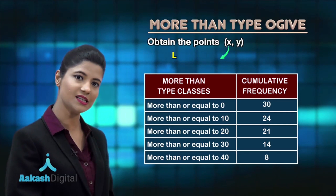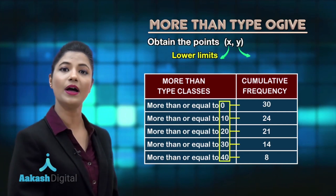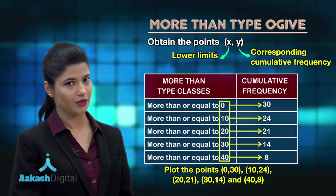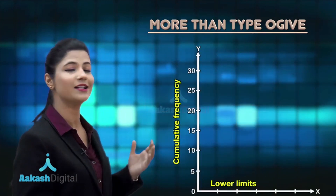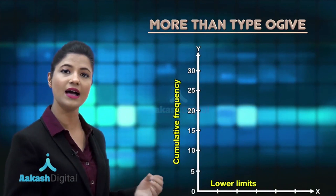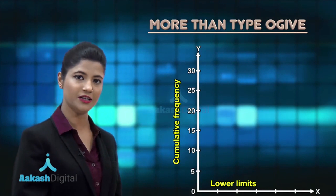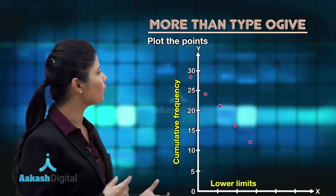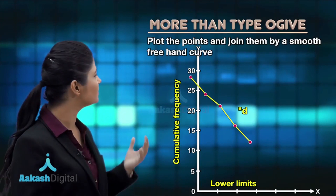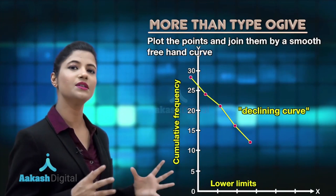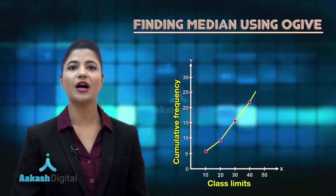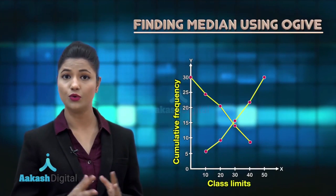After obtaining this cumulative frequency distribution table, you consider the points whose x-coordinates are the lower limits and y-coordinates are their corresponding cumulative frequencies. These points need to be plotted on the graph, where on the x-axis you mark the lower limits of the classes and on the y-axis their corresponding cumulative frequencies. You plot these points and join them by a smooth freehand curve. You will find that this is a declining curve — it is going downward. This is the more than type ogive.